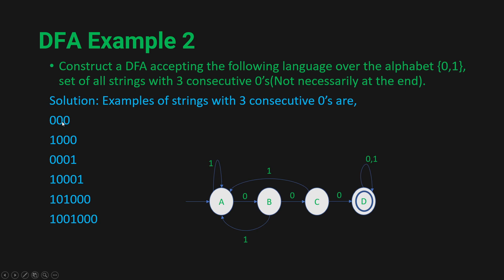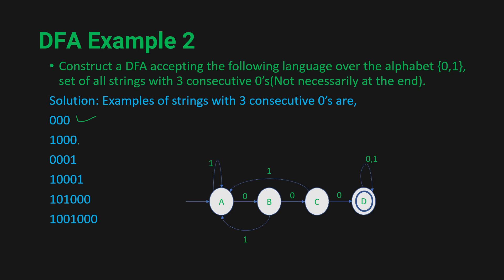Testing '000': from A, 0 to B, 0 to C, 0 to D — D is a final state, so '000' is accepted. Testing '1000': from A, we get 1 and stay in A, then 0 to B, 0 to C, 0 to D — D is a final state, so '1000' is also accepted.